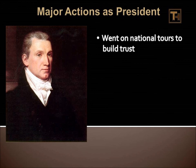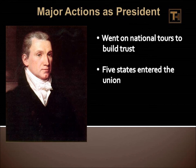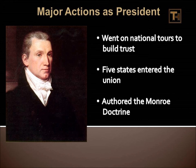As President, James Monroe went on two national tours to build trust in the government. During his administration, five states entered the Union: Mississippi, Illinois, Alabama, Maine, and Missouri. He is also credited with authoring the Monroe Doctrine, a policy which stated that any further efforts by European nations to colonize states in North or South America would be viewed as an act of aggression and would require intervention by the U.S. It also said that the United States would not interfere with internal concerns of European nations. The Monroe Doctrine is one of the longest-standing foreign policies ever held by the United States government.